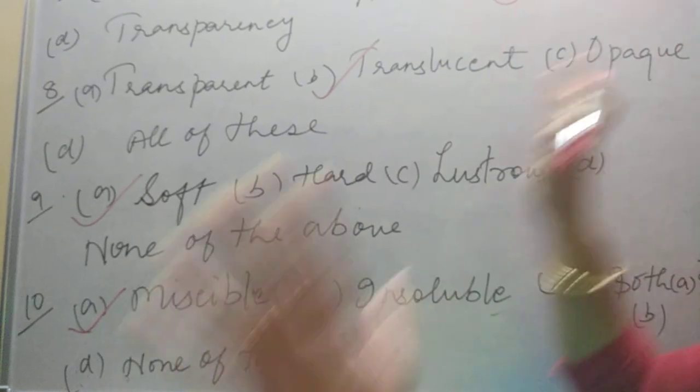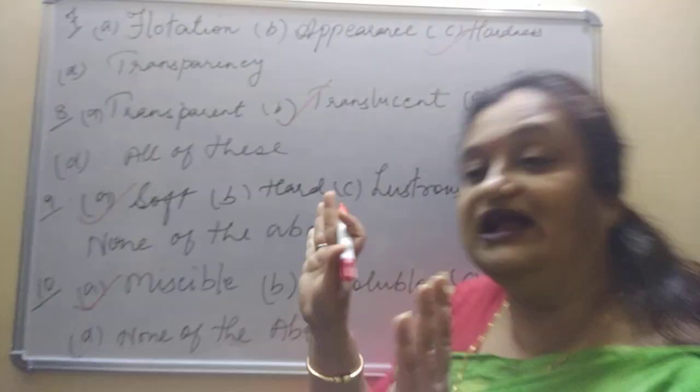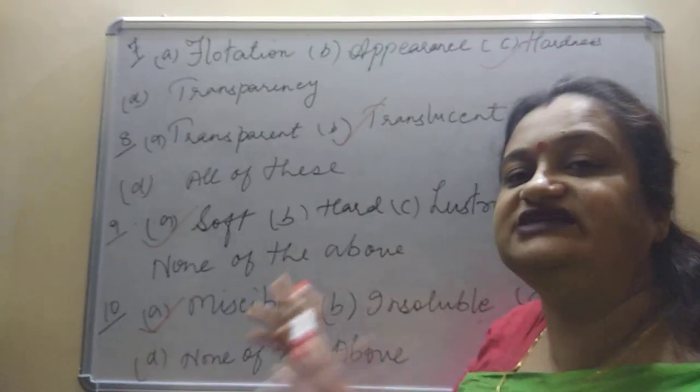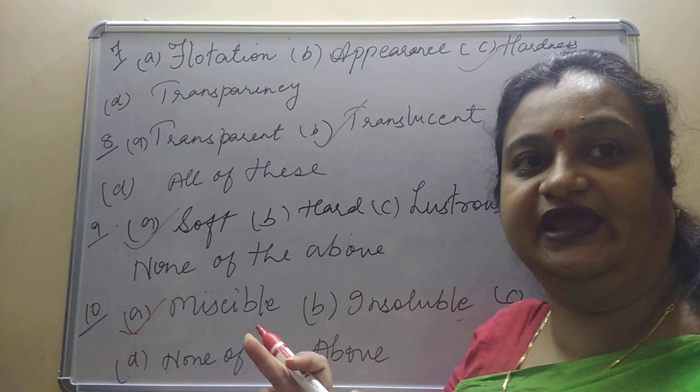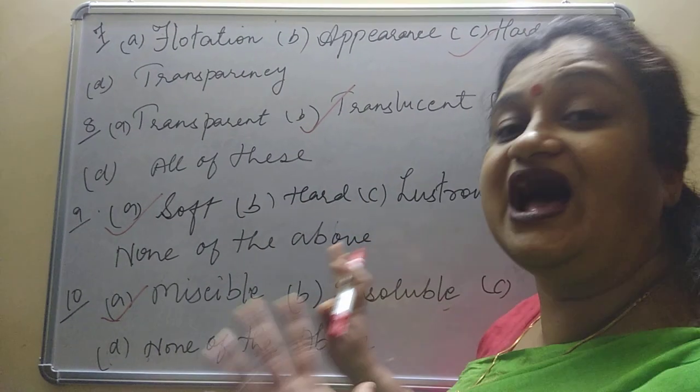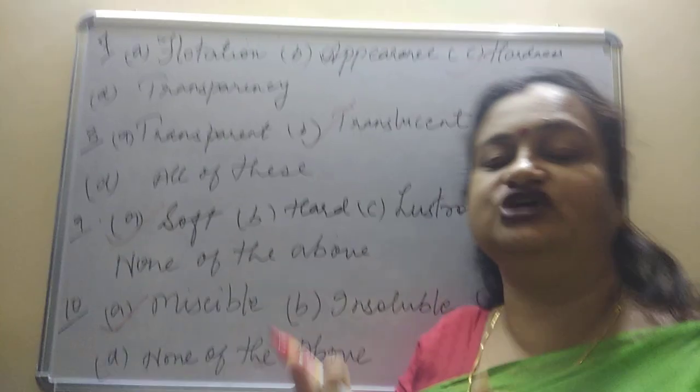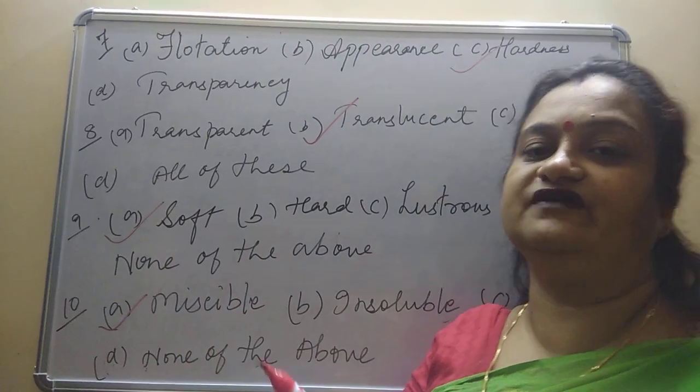Now children, all the questions from multiple choice question, from 1 to 20, you have to write in the classwork copy. And this I will send you as in PDF. The children who got 20, the children who got 18, the children who got 16, 14, 12, whatever.